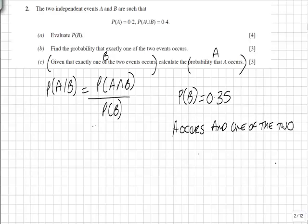A occurring and one of the two occurring must actually just be A occurring. That satisfies both elements.